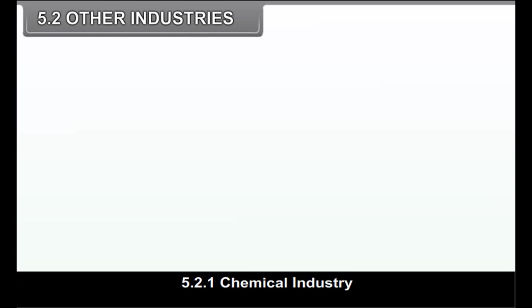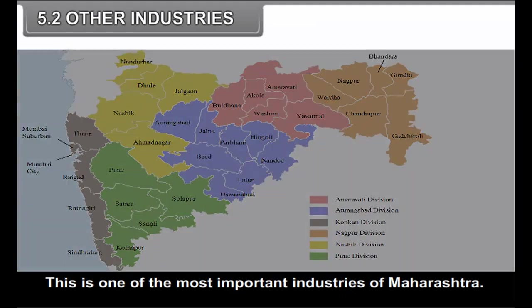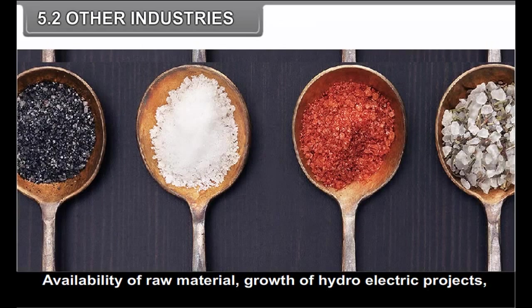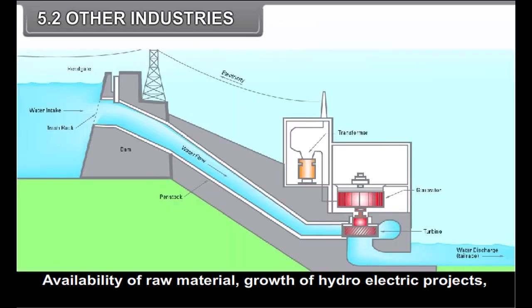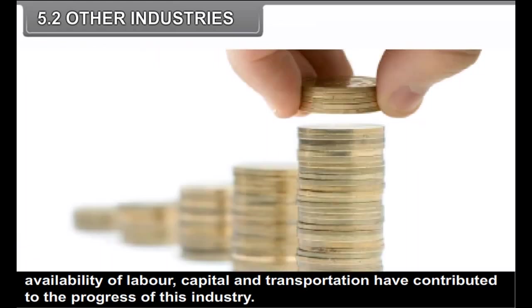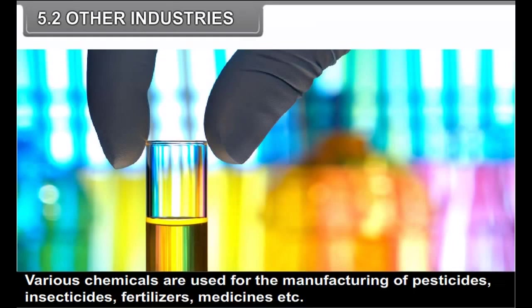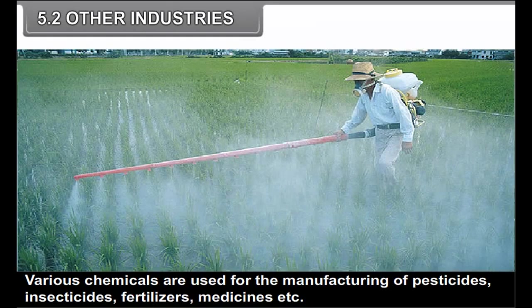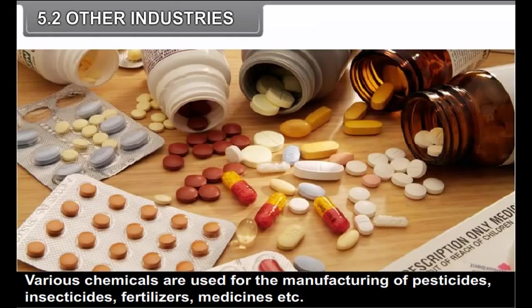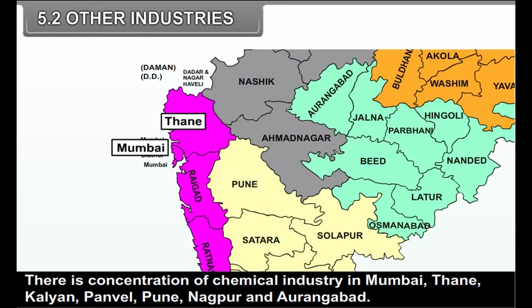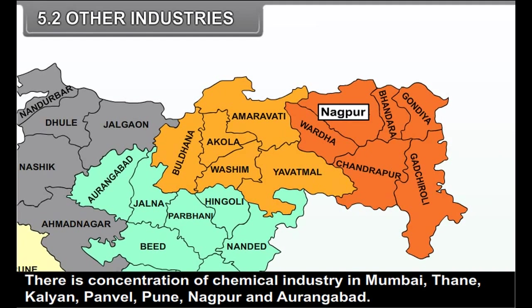Chemical industry is one of the most important industries of Maharashtra. Maharashtra contributes 40% of the total production of chemicals in the country. Availability of raw material, growth of hydroelectric projects, availability of labour, capital and transportation have contributed to the progress of this industry. Various chemicals are used for the manufacturing of pesticides, insecticides, fertilizers, medicines, etc. There is a concentration of chemical industry in Mumbai, Thane, Kalyan, Panvel, Pune, Nagpur and Aurangabad.